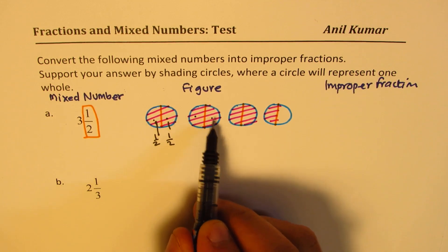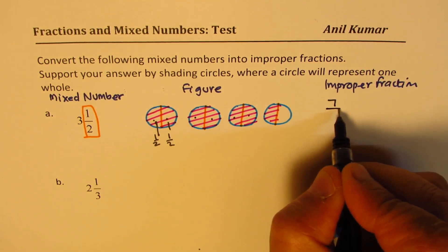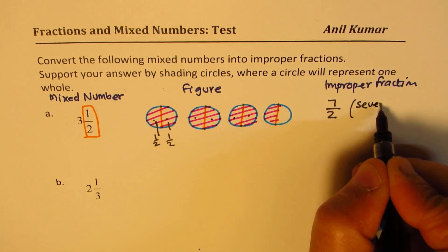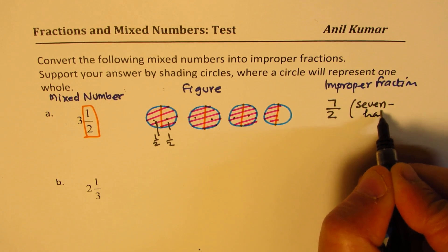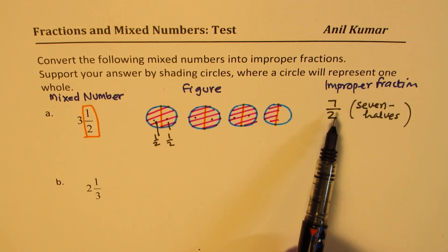five, six, and seven halves. Seven over two. That is seven halves. So that is how you convert them into improper fractions. Seven is greater than two, therefore this fraction is an improper fraction.